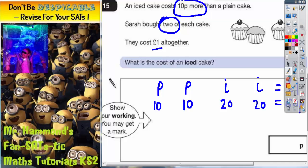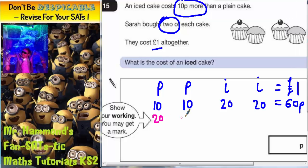Let's try and up the price a little bit. What happens if a plain cake was 20p? An iced cake would be 10p more than that, so they would have to be 30p.